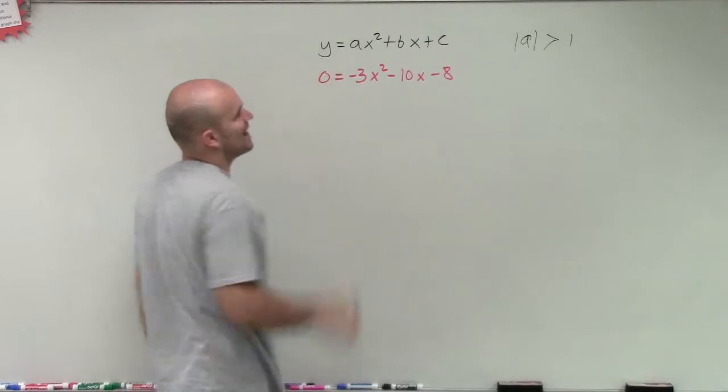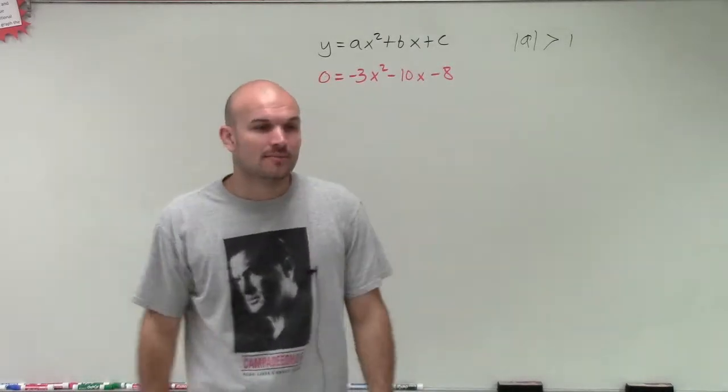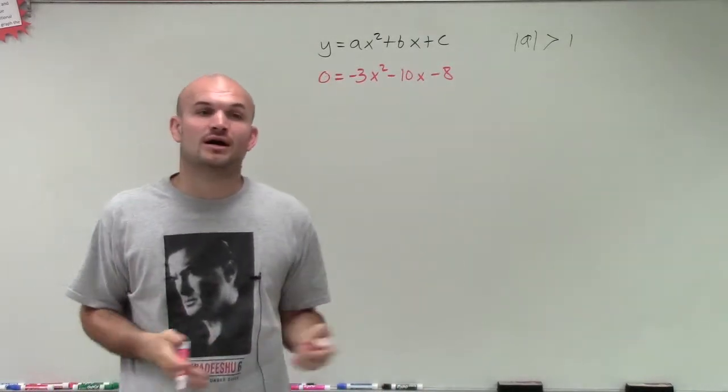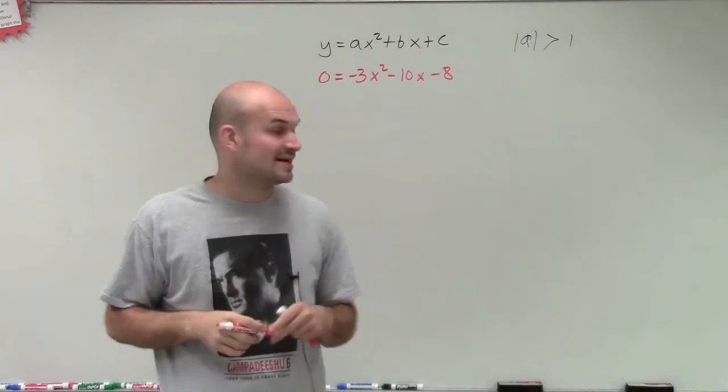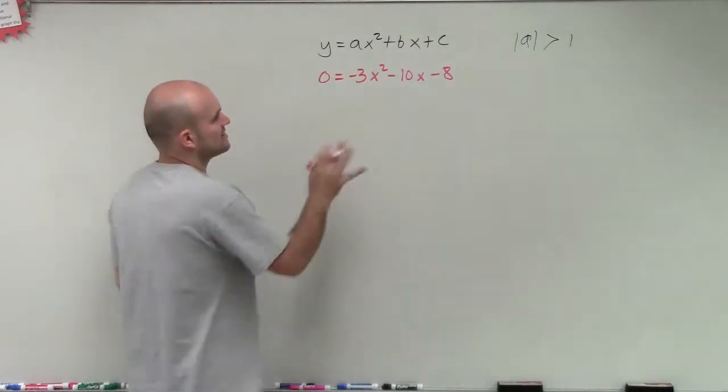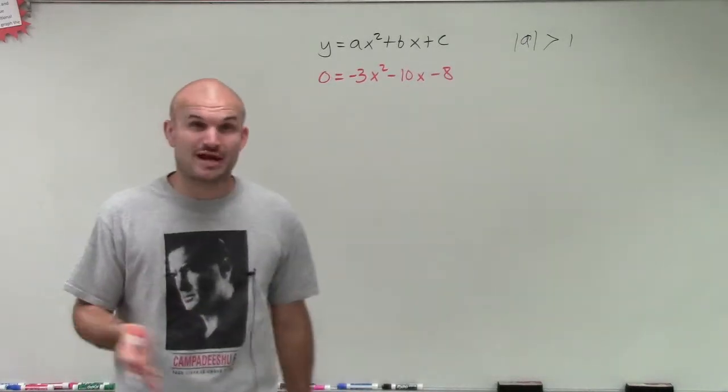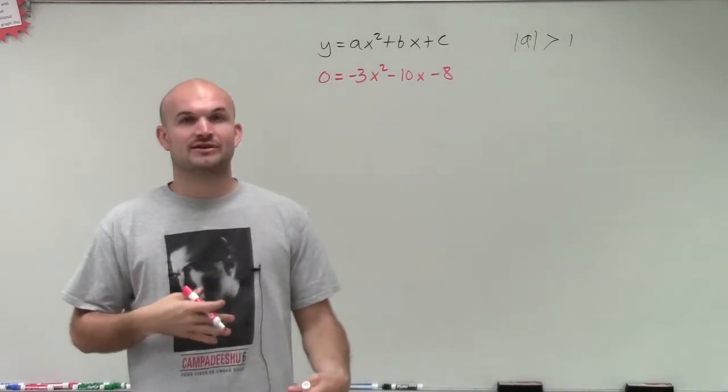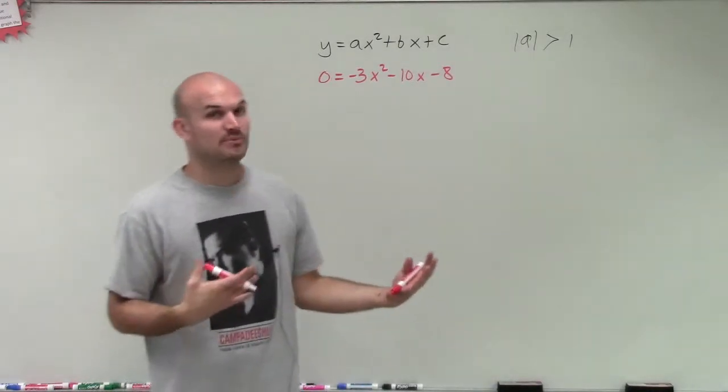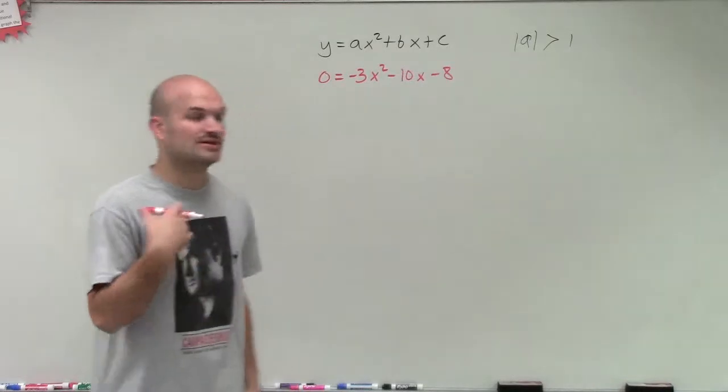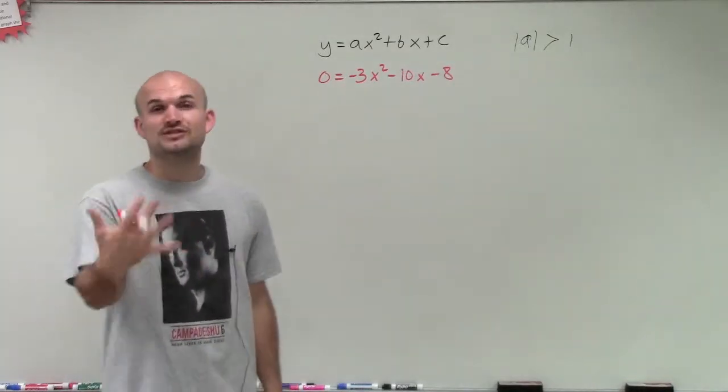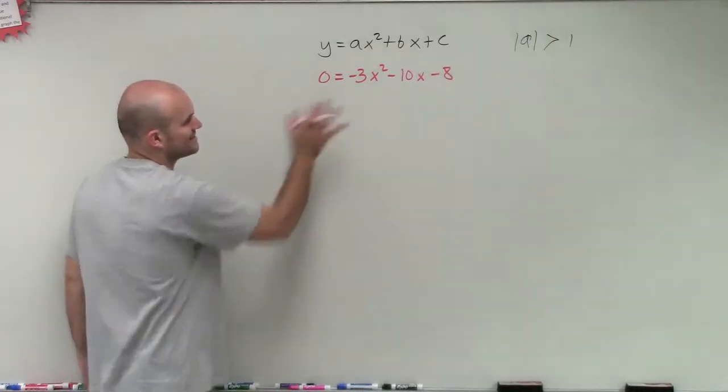We notice that our absolute value of A is going to be greater than 1. But rather than using the box or factor by grouping technique AC method, what I'm going to do is use a little bit of guess and check. And once you get used to factoring, you'll see that this is going to be the preferred method because it's really the quickest. But you've got to get used to factoring and understand the process before you can really get to this stage.